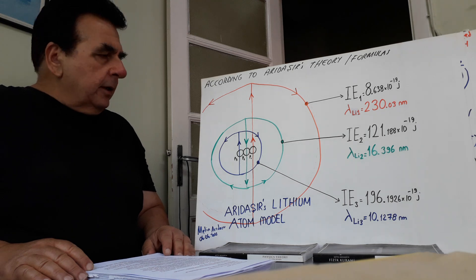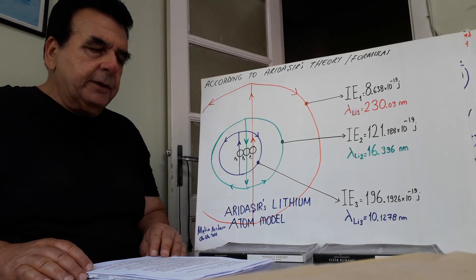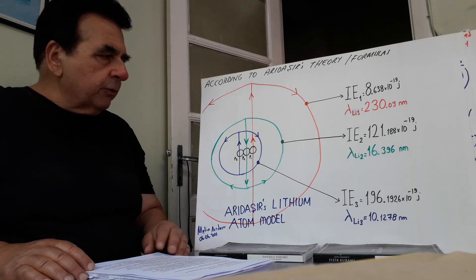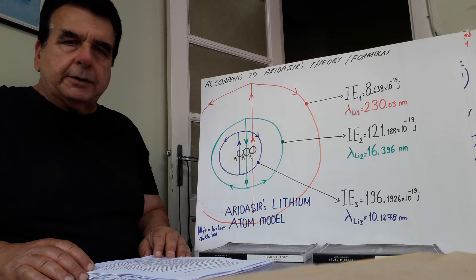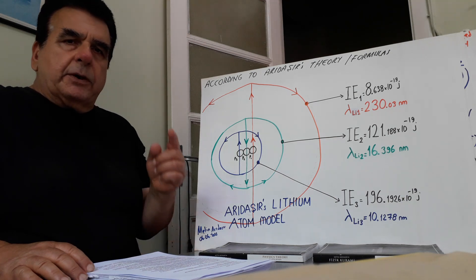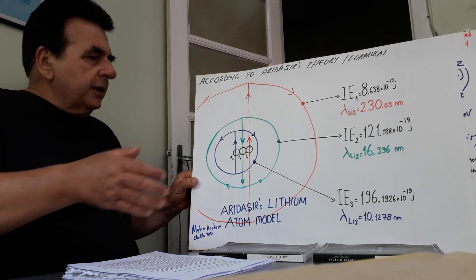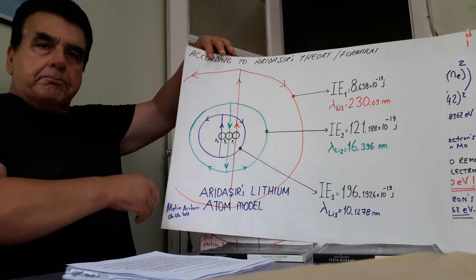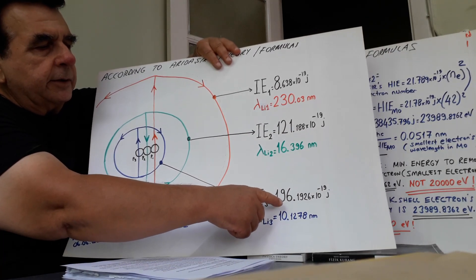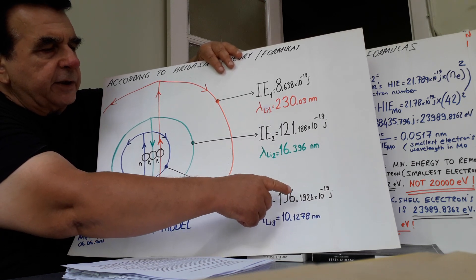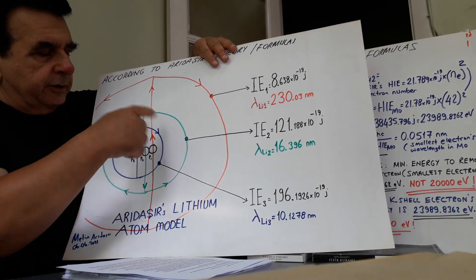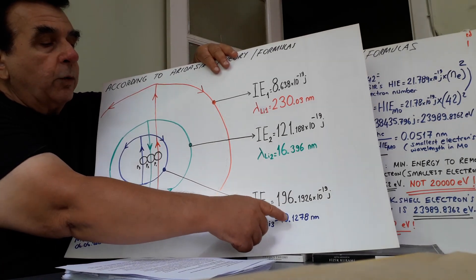Each shell represents only a specific proton-bound electron motion form with a specific wavelength. And in a multi-electron atom, each ionization energy represents only one specific electron. For instance, this is my lithium atom model. The smallest electron ionization energy is 196.19 × 10⁻¹⁹ joules. The corresponding wavelength — the smallest proton-bound electron motion form wavelength — is 10.12 nanometers.